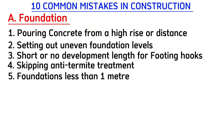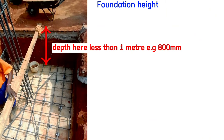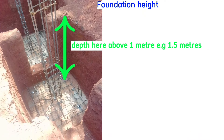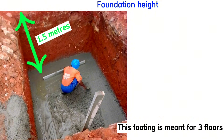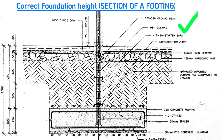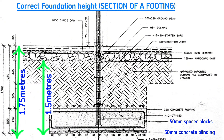Common mistake number five is building foundations less than one meter. Most contractors make the mistake of making the foundation less than one meter from the natural ground level to the bottom of the pit. The correct version — for example, this footing meant for three floors is 1.5 meters from the natural ground level and 1,750 millimeters from the ground floor structure slab level. This includes 50 millimeters of concrete blinding and 50 millimeter spacer blocks on both sides and bottom, with H12 bottom bars and H12 top bars for the footing.